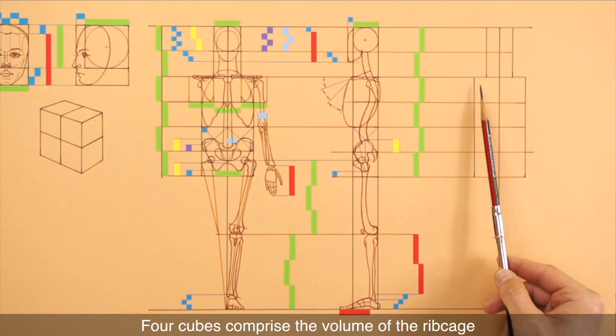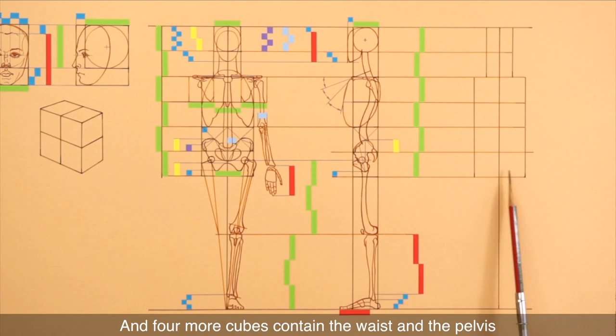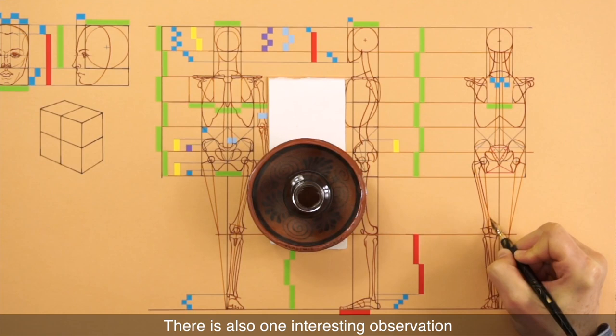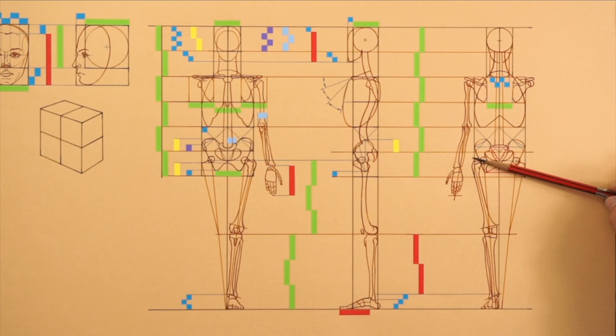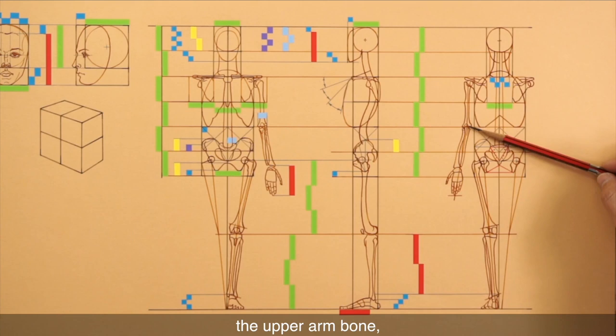There is also one interesting observation about the bones of lower and upper limbs. The thigh bone, the shin bone, the upper arm bone, the lower arm bone, and the hand with the wrist are getting smaller from one to another in a uniform manner.